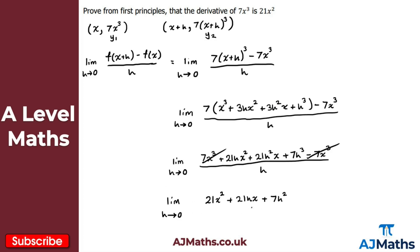Considering the behaviour as h tends to zero: 21 times a very small number approaches 0, and 7 times 0 squared also approaches 0. So we're left with simply 21x², as required. That's the result proven.